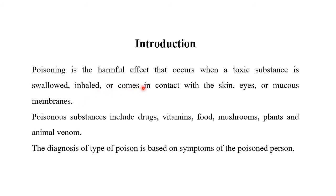Poison is a harmful effect that occurs when a toxic substance is swallowed, inhaled, or comes in contact with the skin, eyes, or mucous membrane. Poisonous substances include drugs, vitamins, food, mushrooms, plants, animal venom, and so on. The diagnosis of the type of poison is based on the symptoms of the person.